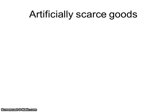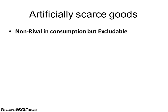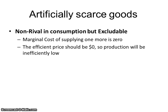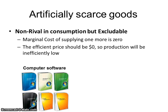The final category is artificially scarce goods. The combination to look for here is they're non-rival but they are excludable. This means the marginal cost of supplying an additional unit of the good is essentially zero — it doesn't cost any more to produce more. The efficient price should be zero, so production will be inefficiently low. An example is computer software: it may cost millions of dollars to produce the first unit, but once it's developed, it costs the company virtually nothing to produce additional copies, especially if they're downloads.